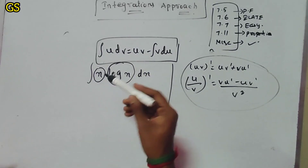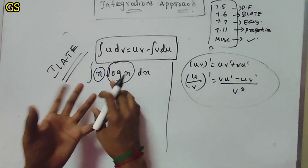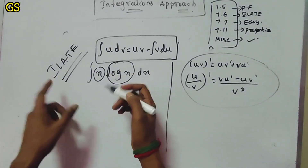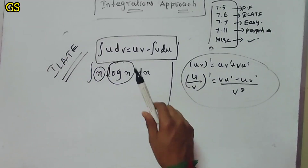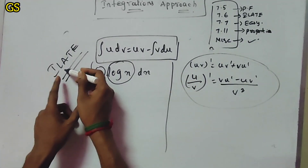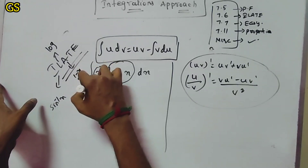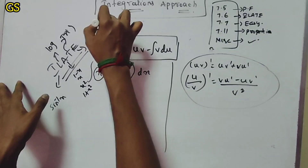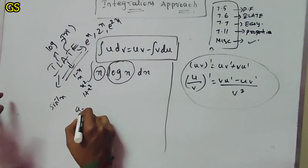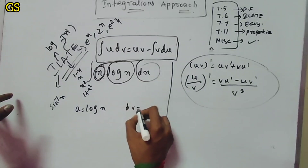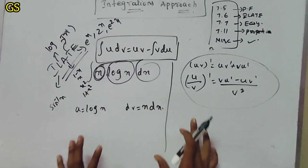Integration by parts: integration of u dv equals uv minus integration of v du. This is how to use two functions — two different functions in product or division. This is how to use it in differentiation product rule: uv' plus vu'. There are different functions and integration formula. You choose u using the ILATE rule — it is a shortcut, a choice, not a strict rule of mathematics.